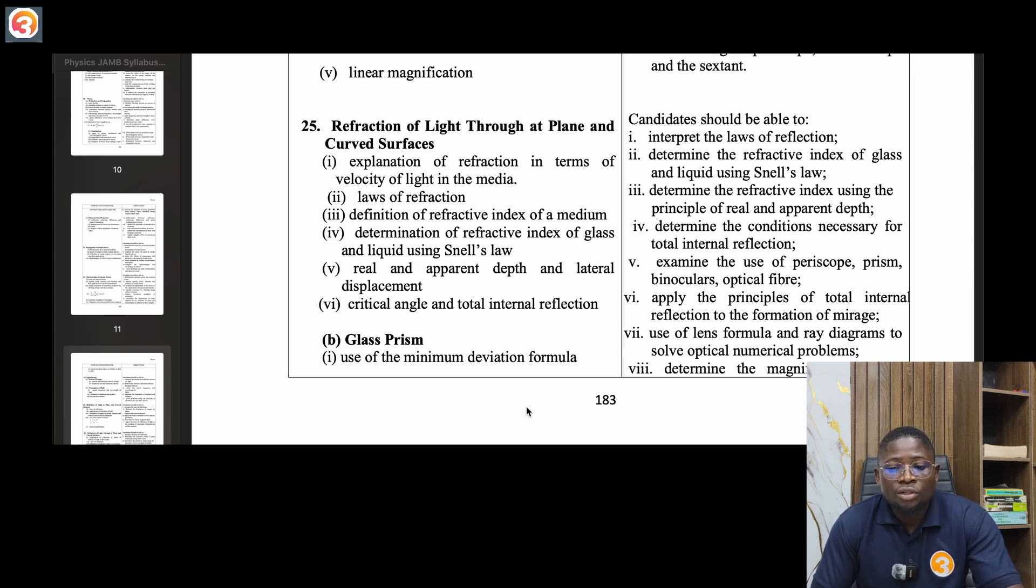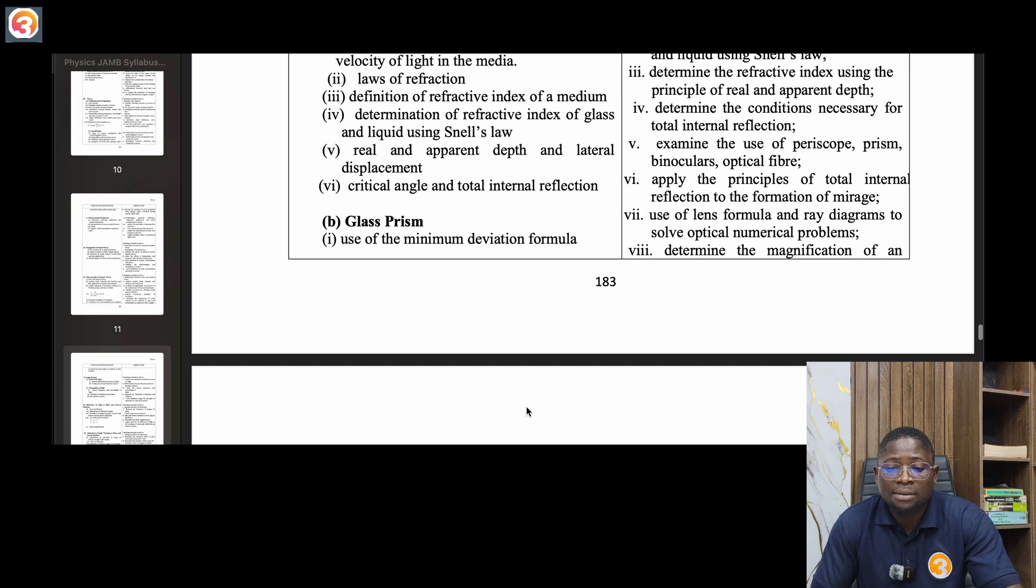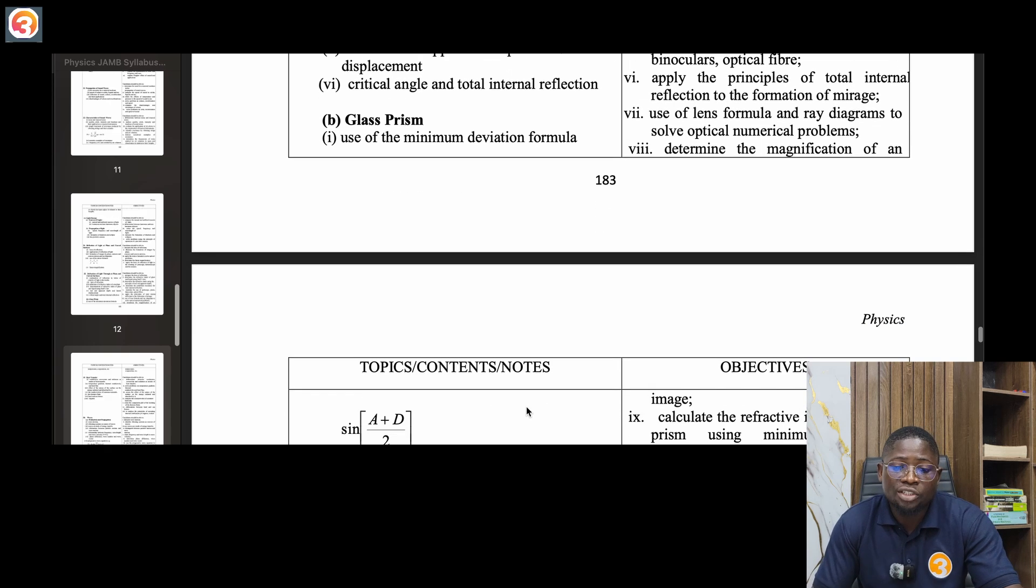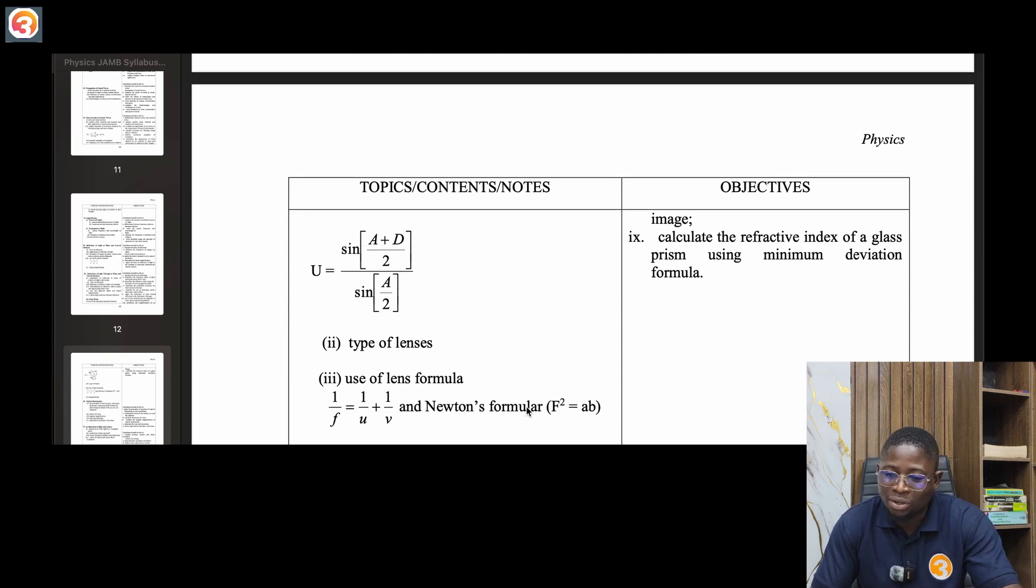Twenty-five, refraction of light at plane and curved surfaces. Explanation of refraction in terms of velocity of light in the media, laws of refraction, definition of refractive index of a medium, determination of refractive index of glass and liquid using Snell's law, real and apparent depth and lateral displacement, critical angle and total internal reflection. Glass prism, uses of minimum deviation formula, very important. Types of lenses, use of lenses, use of lens formula, magnification.